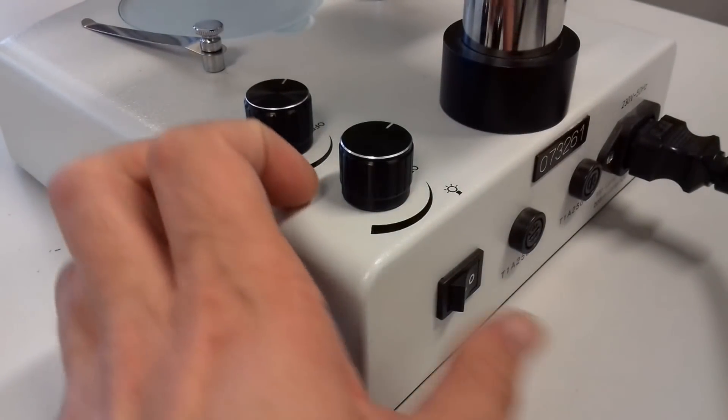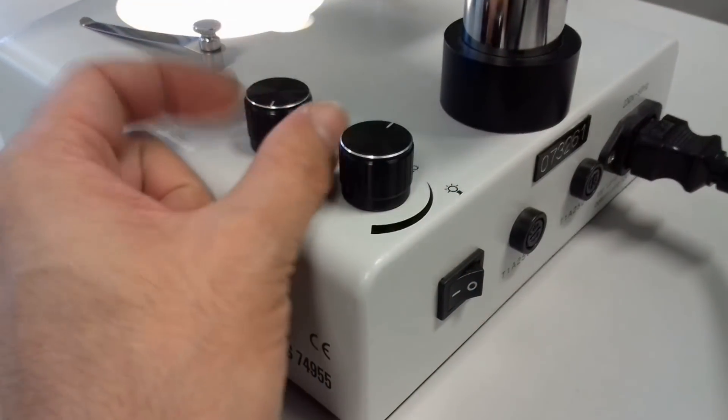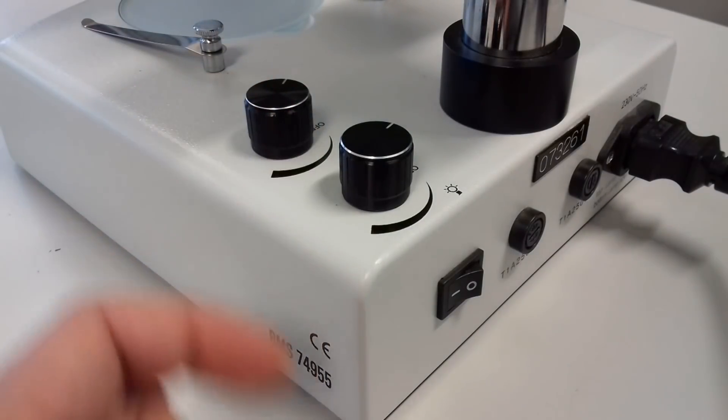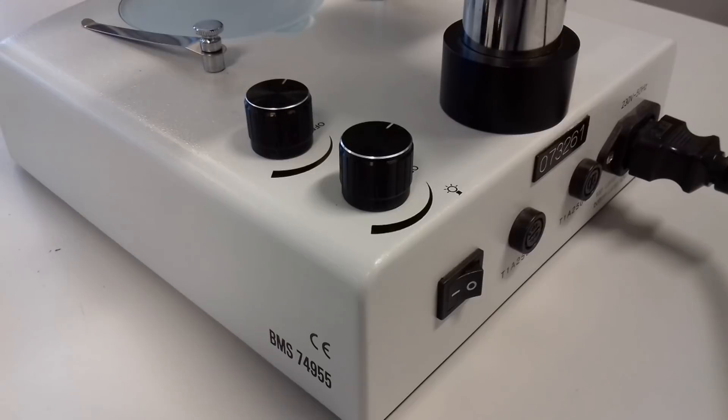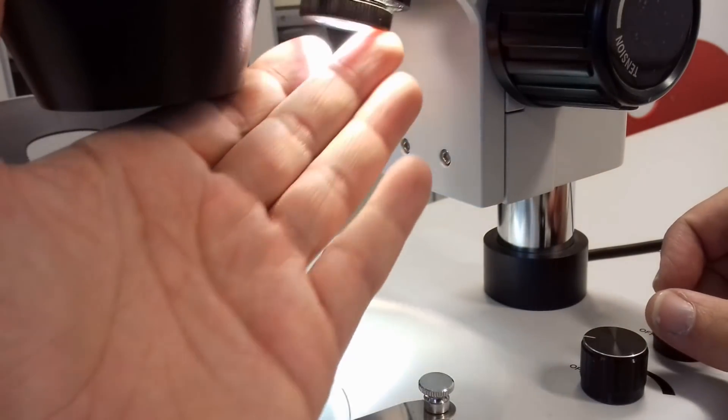And the first thing I want to do is I want to show you how to switch it on. There is of course a main switch on the back and there are two light intensity regulators. One is regulating light which comes from the top and the other one from the bottom. This is actually something that's very common in most stereo microscopes.